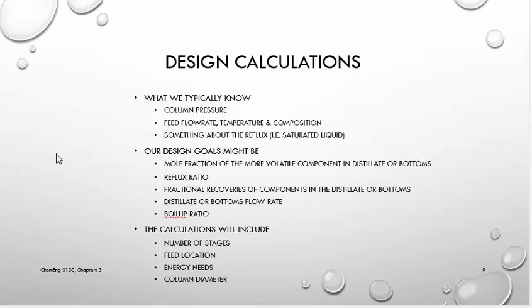Now we're trying to get to the point where we can design the internal features of the column. For our design calculations, typically we're going to know the pressure we want to operate at, because we will have looked at vapor-liquid equilibrium data and determined that we get a good two-phase split at that pressure. We'll know the feed flow rate, usually the temperature, and usually the composition fairly well. Frequently we'll know something about the reflux — whether we want it to be a saturated liquid or sub-cooled liquid. Saturated liquid is most common.